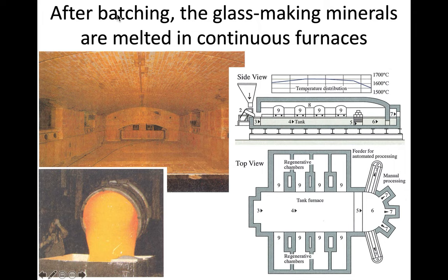When we batch the glass—which means putting the right ratio of materials together—they're melted in a continuous furnace. I showed some different designs. Basically, the continuous furnace has different regions that the glass flows through with different temperature profiles, and those profiles give it different properties and allow us to remove bubbles in certain ways.